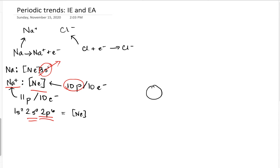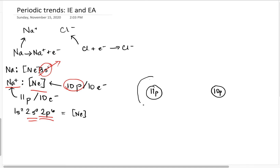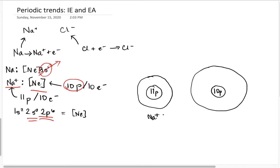If you're guessing that when you have 11 protons your ion is going to be a little bit smaller than if you have 10 protons, you are absolutely right. Sodium ion is smaller than neon because it has a larger atomic charge — it has more protons, and so it attracts its electrons in more closely.